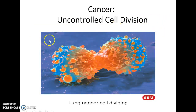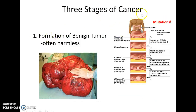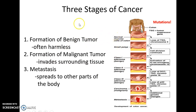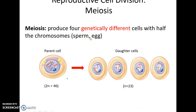Cancer is uncontrolled cell division caused by accumulating mutations. Cells initially divide and form benign tumors, but continue acquiring mutations until they become malignant, invade surrounding tissues, and metastasize — spreading to other parts of the body and often causing disruptions and death.